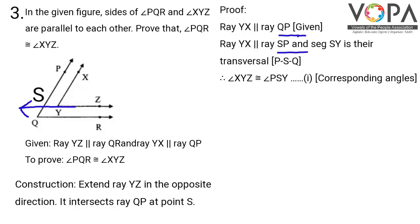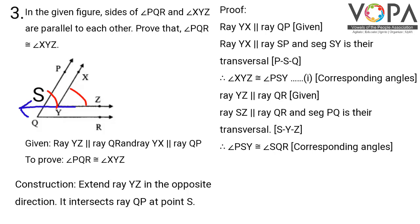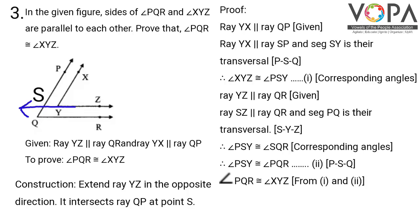QP can be written as SP. Hence, ray YX is parallel to ray SP and segment SY is their transversal. Therefore, angle XYZ is congruent to angle PSY as they are corresponding angles. Now, ray YZ is parallel to ray QR, so YZ can be written as SZ. Ray SZ is parallel to ray QR and segment PQ is their transversal. Therefore, angle PSY is congruent to angle SQR, which is the same as angle PQR, as they are corresponding angles. Number this as equation 2.